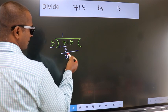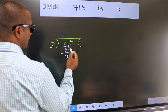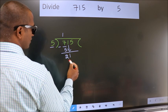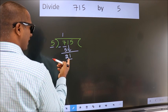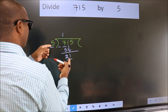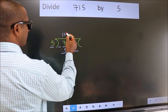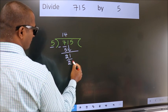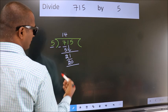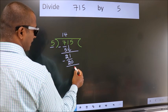After this, bring down the beside number. So, 1 down. So, 21. A number close to 21 in 5 table is 5 fours 20. Now, we subtract. We get 1.